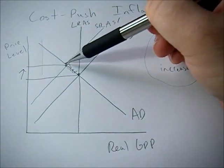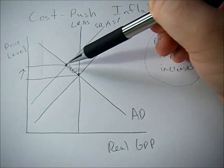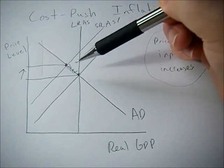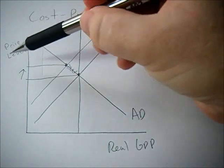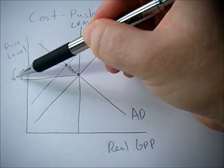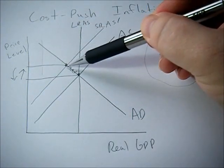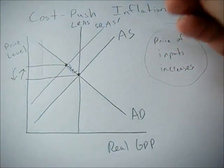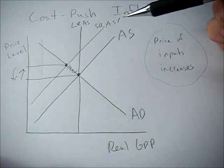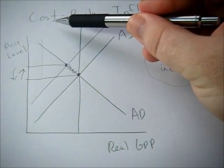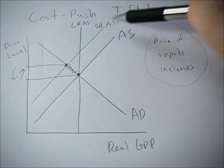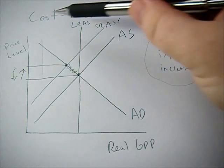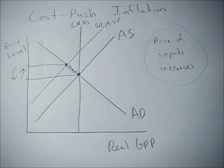What happens here is that prices are too high and the cost of labor is too high, so the cost of labor goes down because labor demand falls. Over time, price levels will drop until we get back to this equilibrium point, which is where we'll be in the long run. But in the short run, we see inflation caused by this price of input increase — which is cost push inflation.